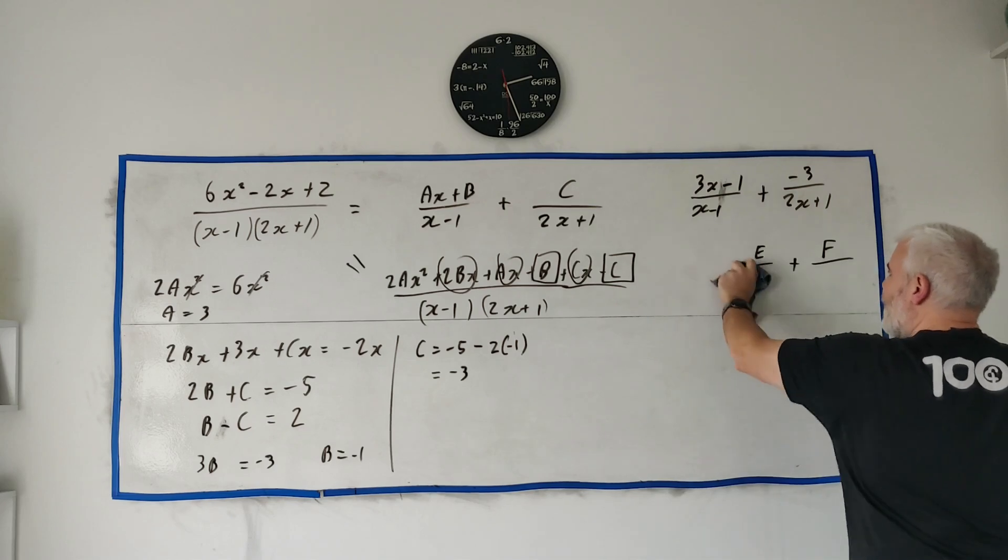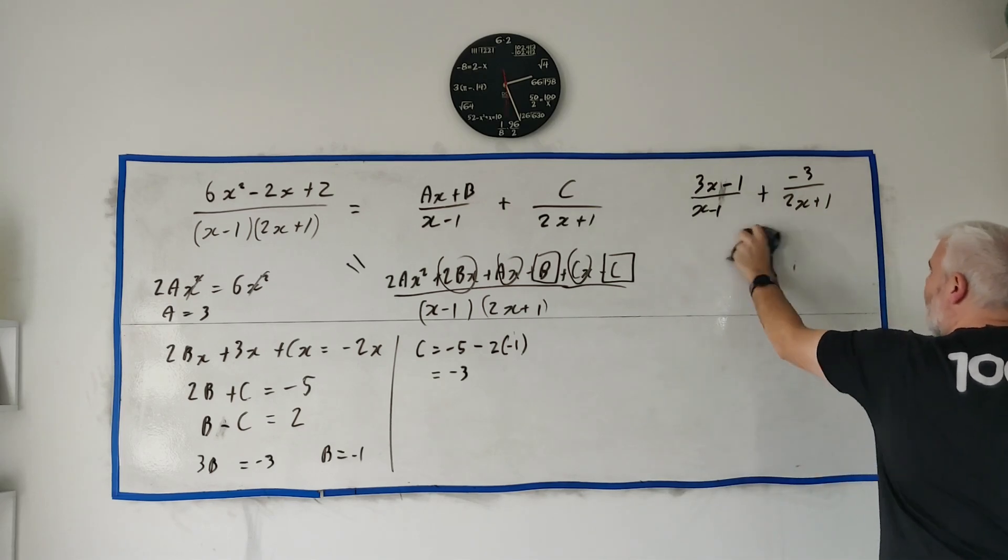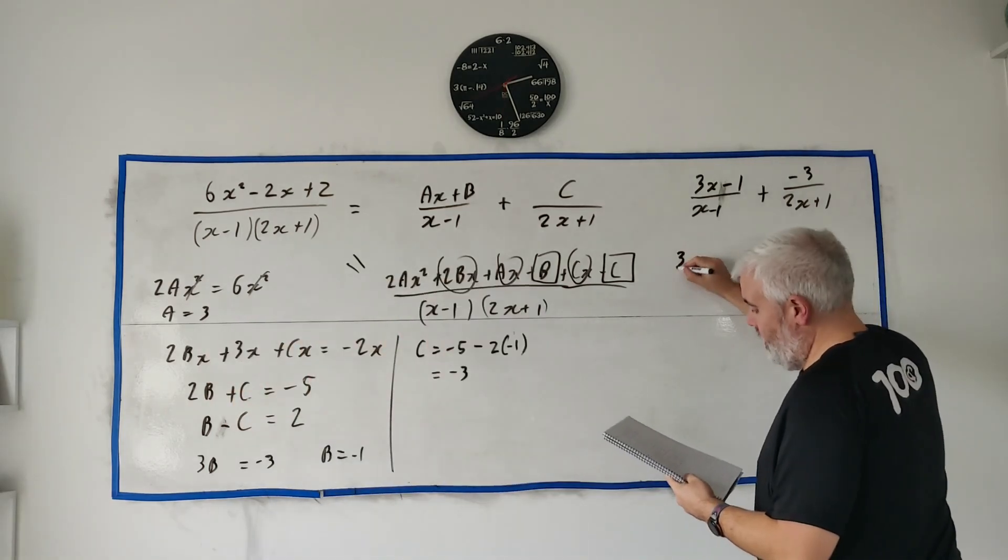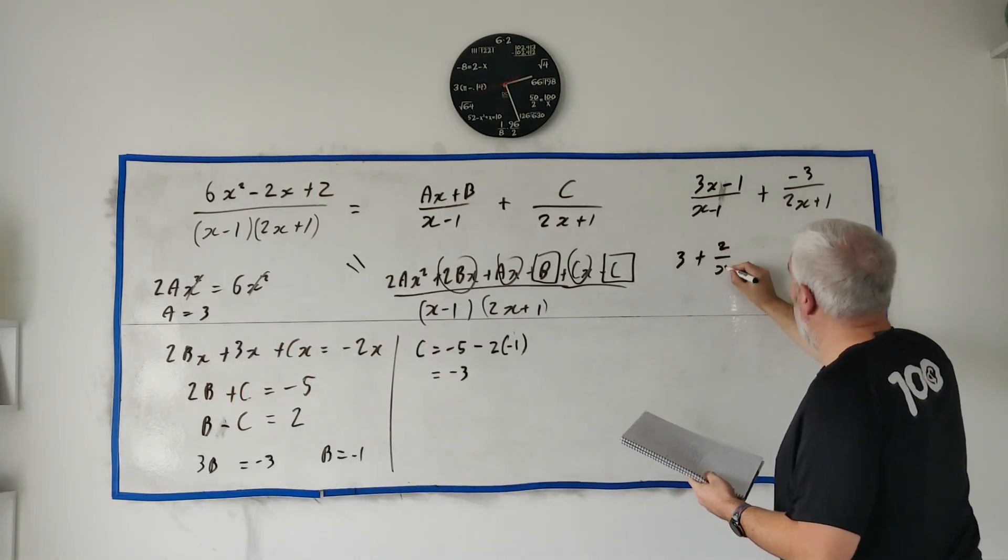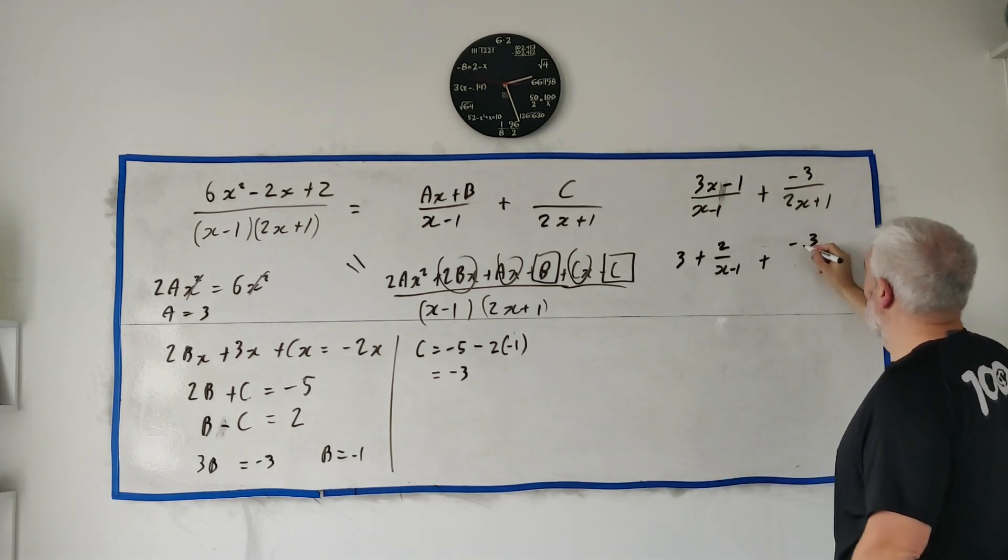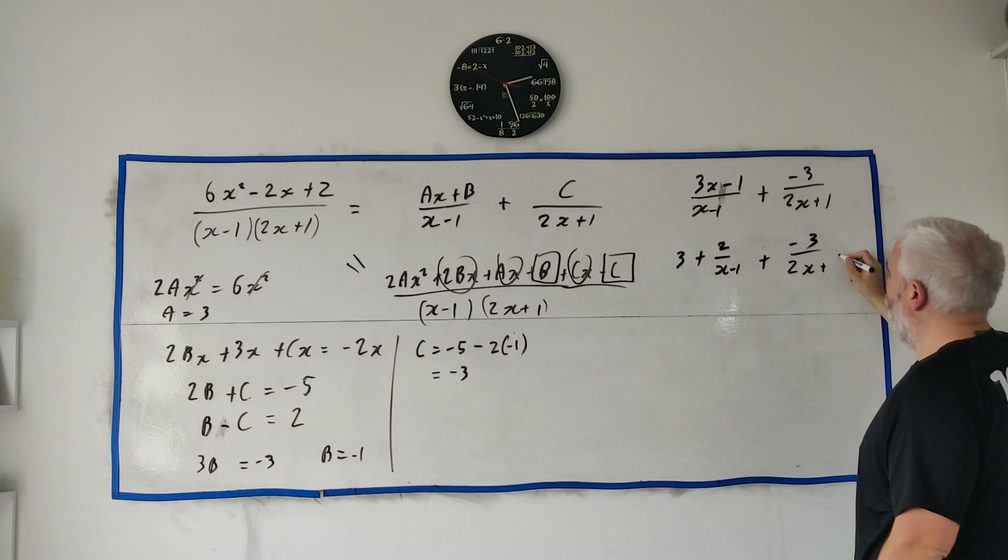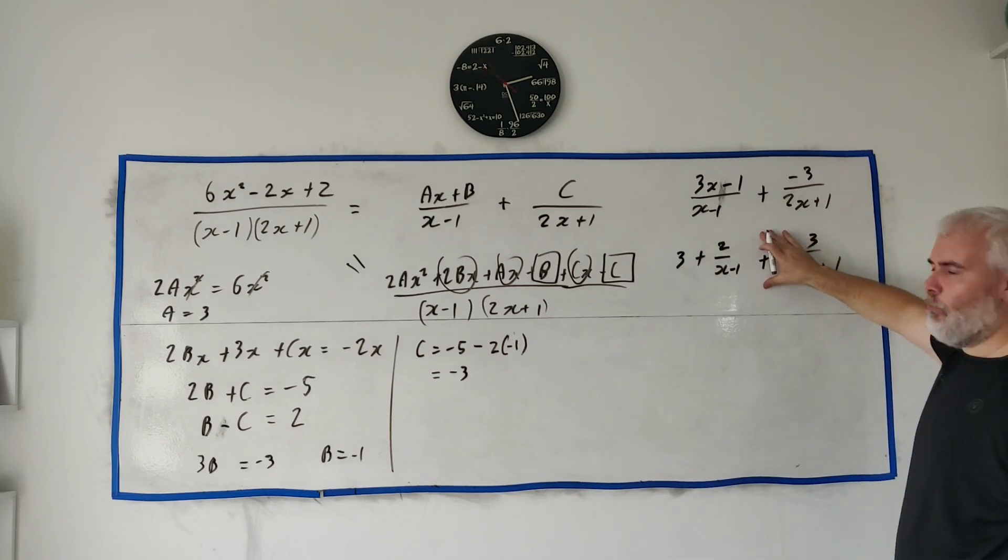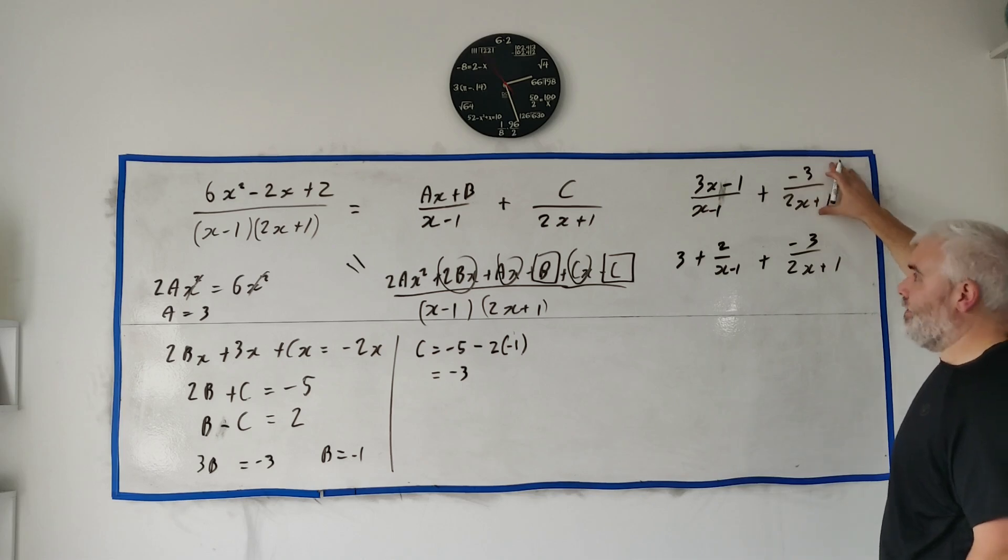That'd be my answer. It's perfectly okay answer. Another answer would be this one here. Let me clean this up and let me just write down what that would have been. It would have been 3 plus 2 over x minus 1, plus minus 3 over 2x plus 1. And a third answer you would have.